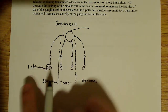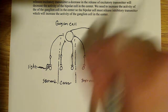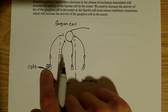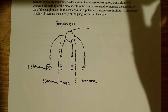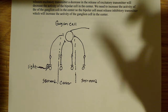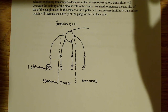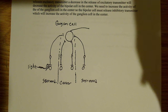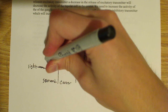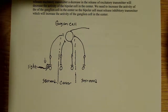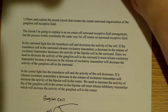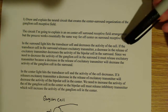If I think about this: light hits the transducer, it releases excitatory transmitter. But when the light hits the transducer, it decreases the activity of the transducer cell. So a decrease in excitatory transmitter leads to a decrease in the activity of the bipolar cell.